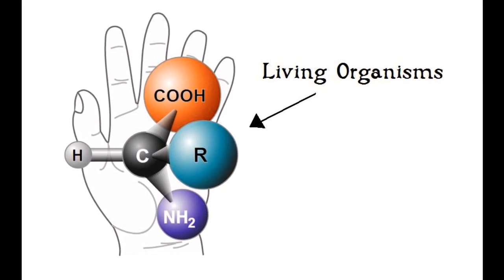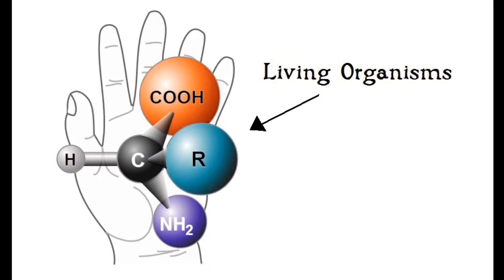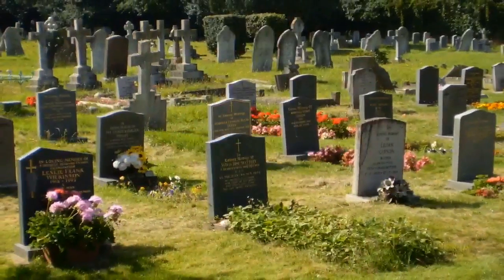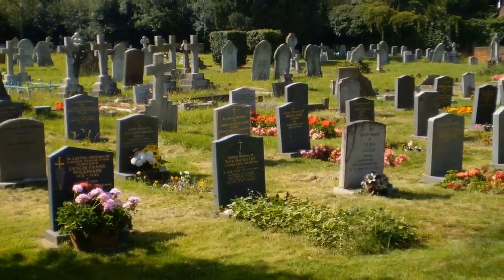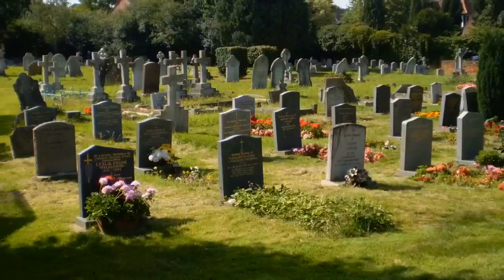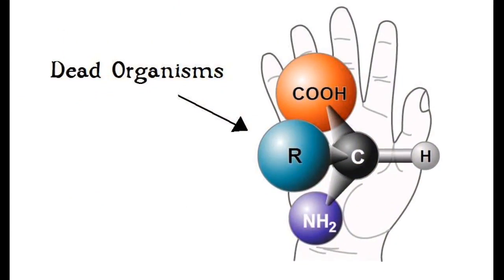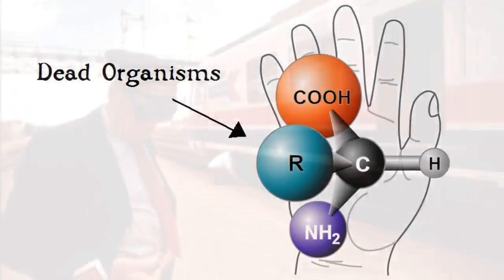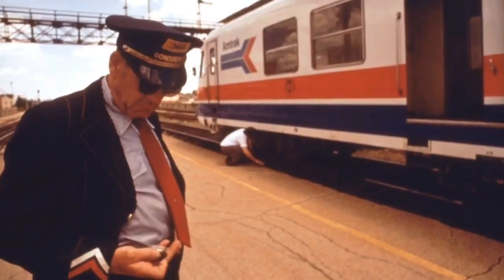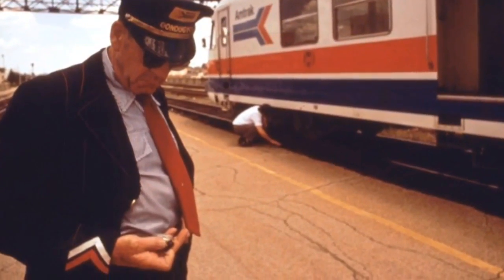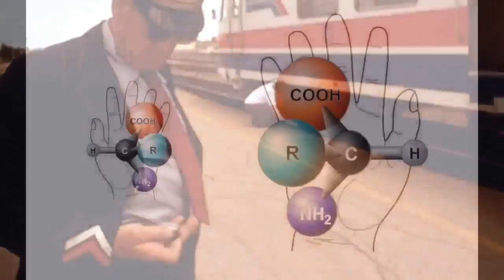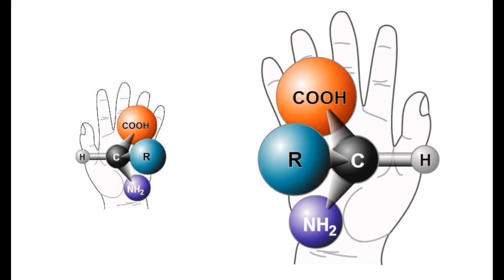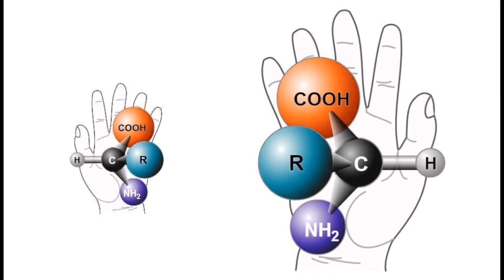Crucially, proteins in living organisms contain only left-handed amino acid molecules. This ratio begins to change once the organism dies. With exceptions such as teeth and the lenses of eyes, right-handed molecules are only found in dead organisms. So over time, after death, the ratio of right-handed and left-handed molecules begins to change, and bit by bit there will be more and more right-handed molecules. And thus, we can date the specimen.